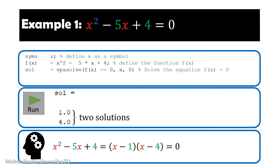This will be the case for polynomial equations. For non-polynomial equations, vpasolve gives only one solution — the first it finds. Thus for polynomial equations, it is not worth giving the initial value, as the function can find all solutions.